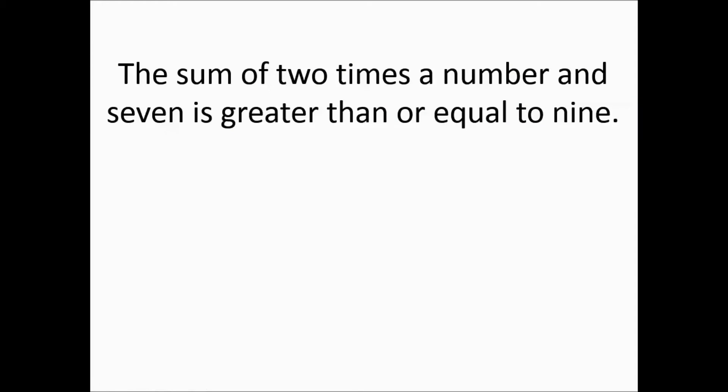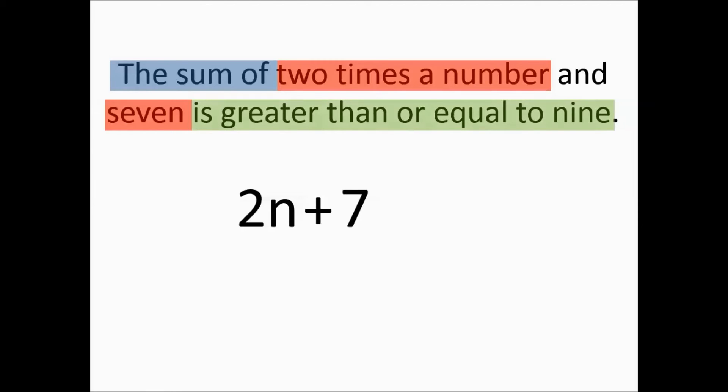The sum of two times a number and seven is greater than or equal to nine. The sum of means you're adding two things. The two things you're adding are separated by the word and. So we have the two times a number and seven. And then we have is greater than or equal to nine. So that's with the extra bar underneath the inequality sign. Is greater than or equal to nine.